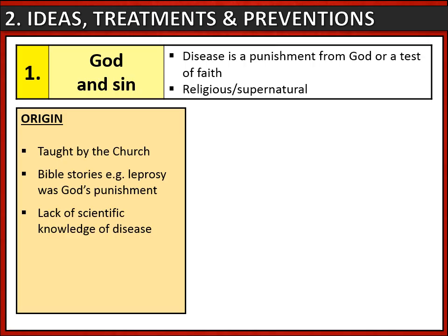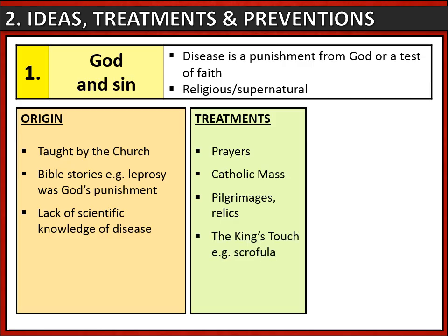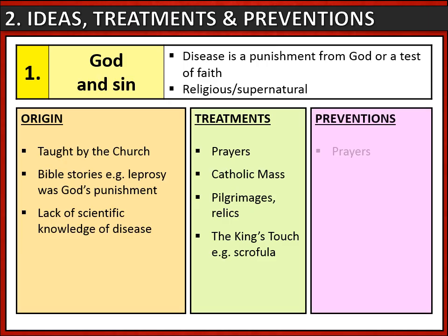Those who believed that God was responsible for disease took a religious approach to treatment. They might say prayers or go to Catholic mass, maybe take a pilgrimage to visit a holy site where they might touch a relic. They also believed that the king himself could cure disease — he was chosen by God, so the king's touch was believed to treat even deadly diseases like scrofula. People also took a religious approach to prevention: they might say prayers or try to avoid sin. By living a sin-free life, they hoped to avoid being sent disease. They might also keep themselves clean, as hygiene was believed to be linked to godliness.